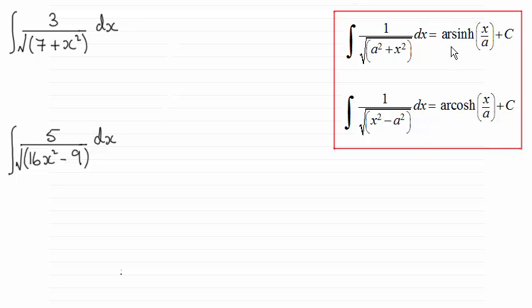Now in an earlier video I showed you that if you were to differentiate arcsinh(x/a), the result was 1 over the root of a squared plus x squared, where a is a constant. And similarly if you differentiate arccosh(x/a), you end up with 1 over the root of x squared minus a squared.